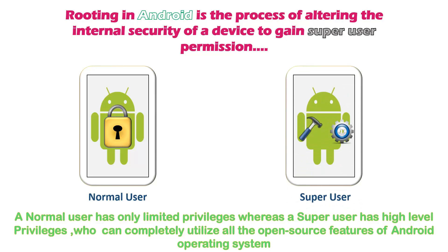In Windows Operating System, you should have seen this — there are two types of users. One user is called the Standard User and the other is called the Administrator. In the same way, Android Operating System also has two types of users: one is called the Normal User, and the other is called the Super User or Privileged User. In Windows, a standard user has only a limited number of privileges and is restricted from doing certain actions to prevent security threats.